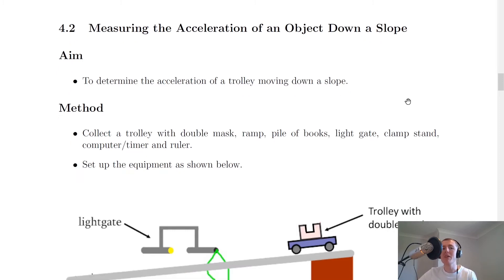The aim, first of all, is to determine the acceleration of a trolley moving down a slope. You should have done this at National 5 level. I should point out as well that for the method we're about to do, there are other methods available. There are other ways of doing this experiment, but I'm only going to take you through one way of measuring the acceleration. You might have done it differently in class, however.